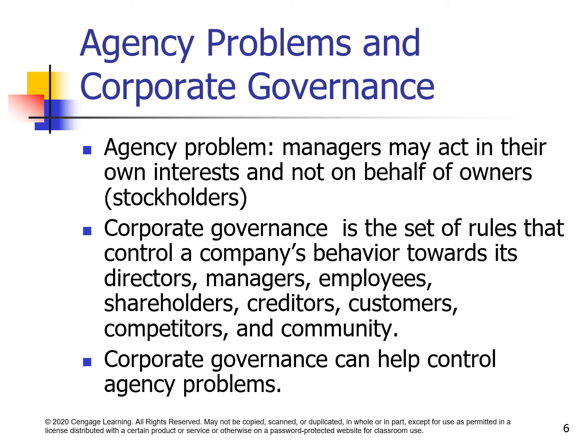For corporations, two key problems are the agency problem and corporate governance. The agency problem is that managers may act in their own interest and not on behalf of owners. Corporate governance is the set of rules that control a company's behavior towards its directors, managers, employees, shareholders, creditors, customers, competitors, and community. Corporate governance can help control the agency problem.